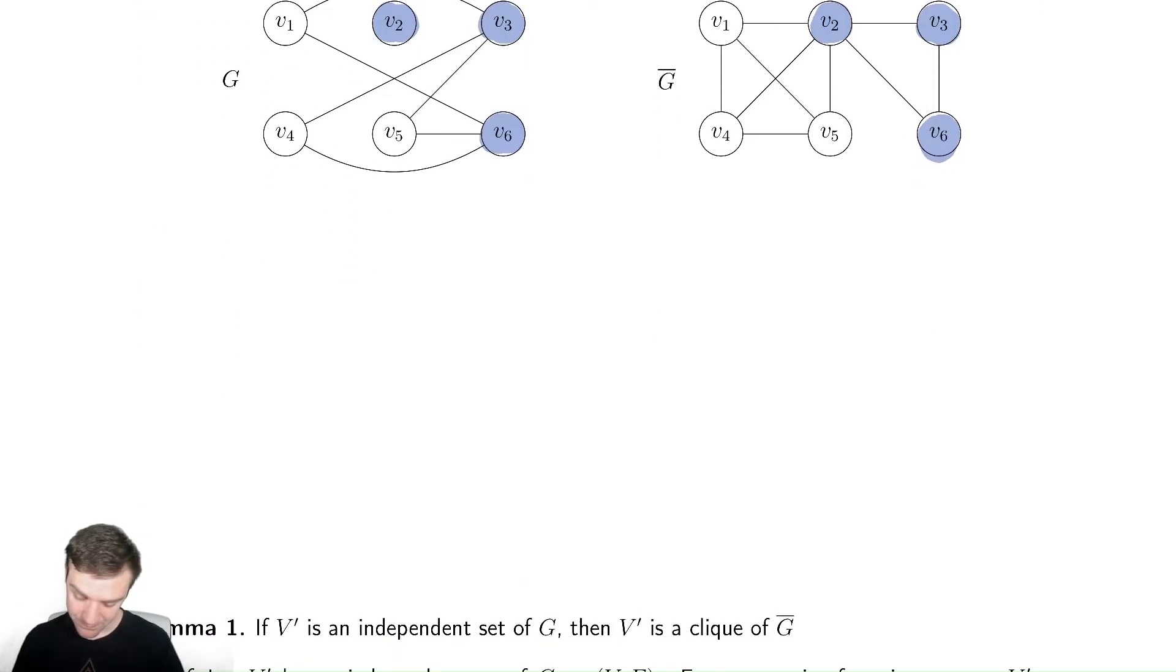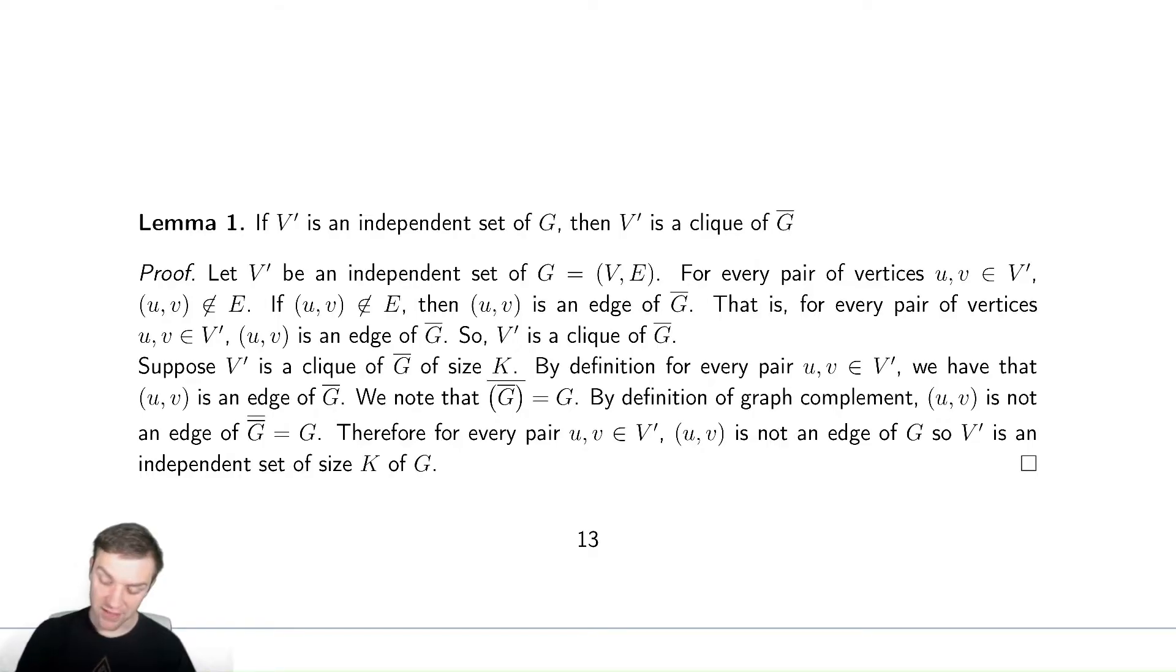So I have a lemma for this, which says that if V' is an independent set of G, then it is a clique of G bar. How can we prove this? I will go through this in sort of two different ways here. We will see.